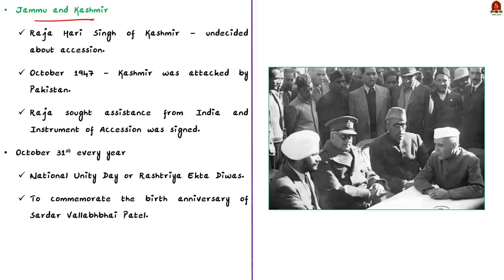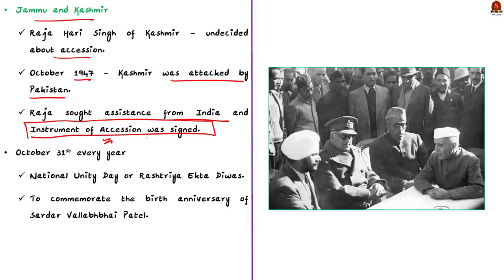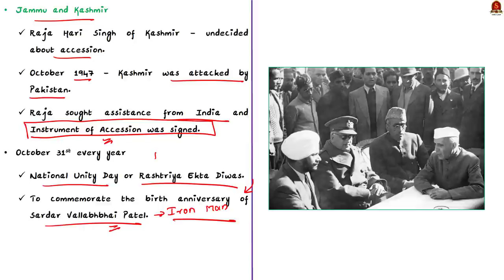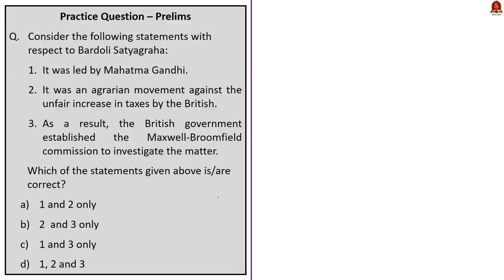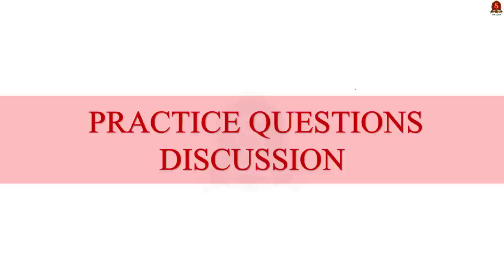Finally, comes Jammu and Kashmir. Raja Hari Singh of Kashmir had been undecided about accession. However, in October 1947, when Kashmir came under the attack of Pakistan, the Raja sought assistance from India. Sardar Patel, as the Home Minister, extended the help of India, and in return, Raja Hari Singh signed the instrument of accession with India. Due to these efforts, Sardar Patel earned the title of 'Iron Man of India.' It is due to the efforts of Sardar Patel that India maintained internal stability in the initial years of its formation. This is why National Unity Day or Rashtriya Ekta Diwas is celebrated every year on October 31st to commemorate the birth anniversary of Sardar Vallabhbhai Patel. We have now come to the end of the news article discussion session.